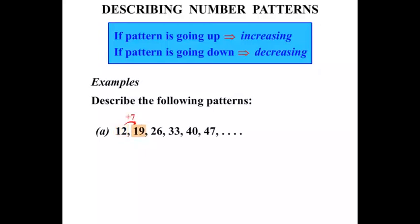From 19 to 26 we add 7 again. From 26 to 33 we add 7. From 33 to 40 we add 7. And from 40 to 47 we add 7. So it is a consistent pattern. Since the pattern is adding 7 in each case, we say that the pattern is increasing by 7.